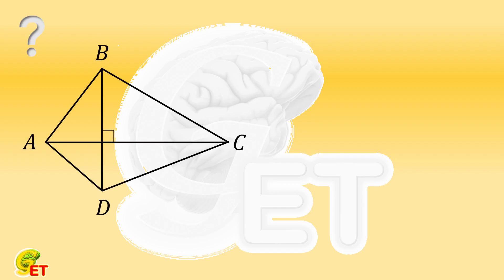The diagonals of quadrilateral ABCD are perpendicular to each other. The length of side AB is 25, BC is 39, and CD is 36. So how long is the side DA?